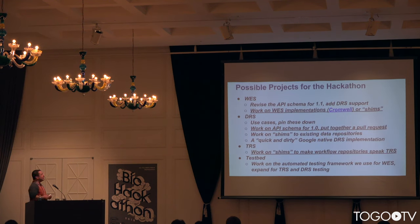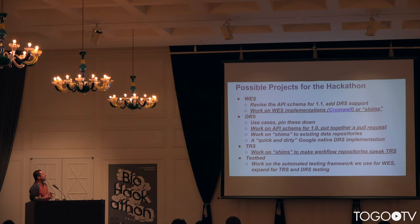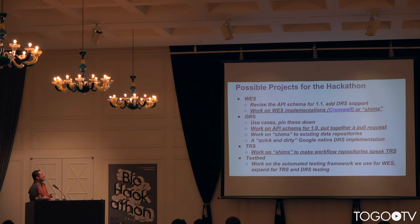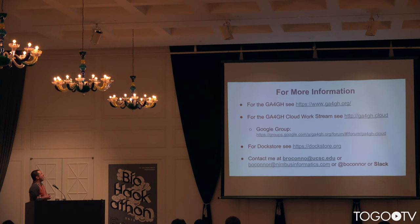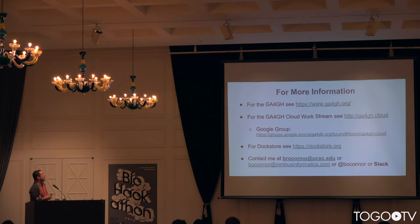For the hackathon, there are a whole host of things we could work on — lots of conversations on our mailing list about possible projects. We could work on WES implementations, API schema definitions for the Data Repository Service, or shims to other workflow repositories to speak TRS. For more information, see the GA4GH website and the Cloud Workstream website at GA4GH.cloud. Our Google Group is very active with ideas for this hackathon. Check out dockstore.org for Dockstore, and I'm happy to answer questions over Slack or email. Thank you very much.